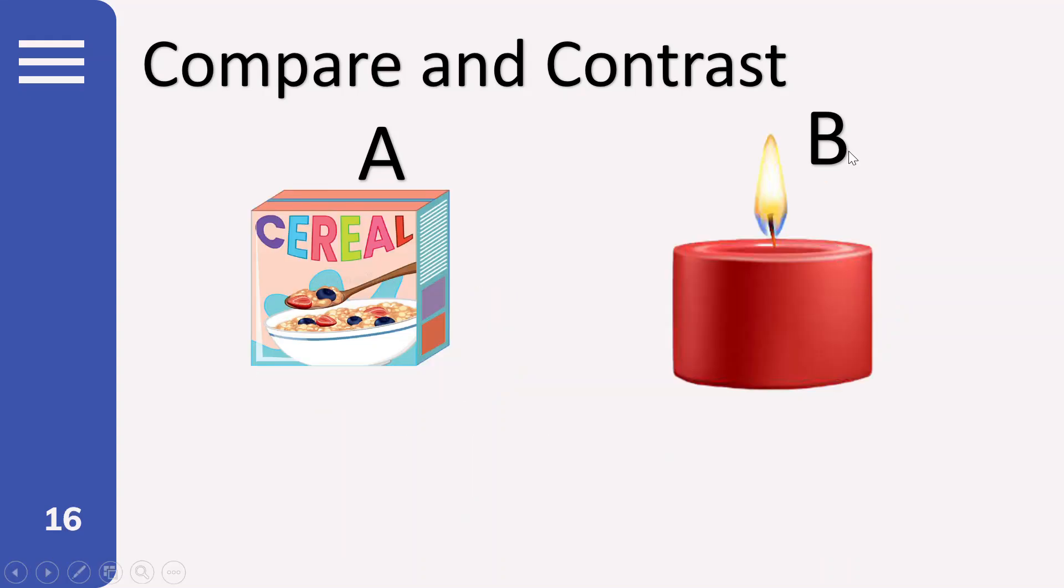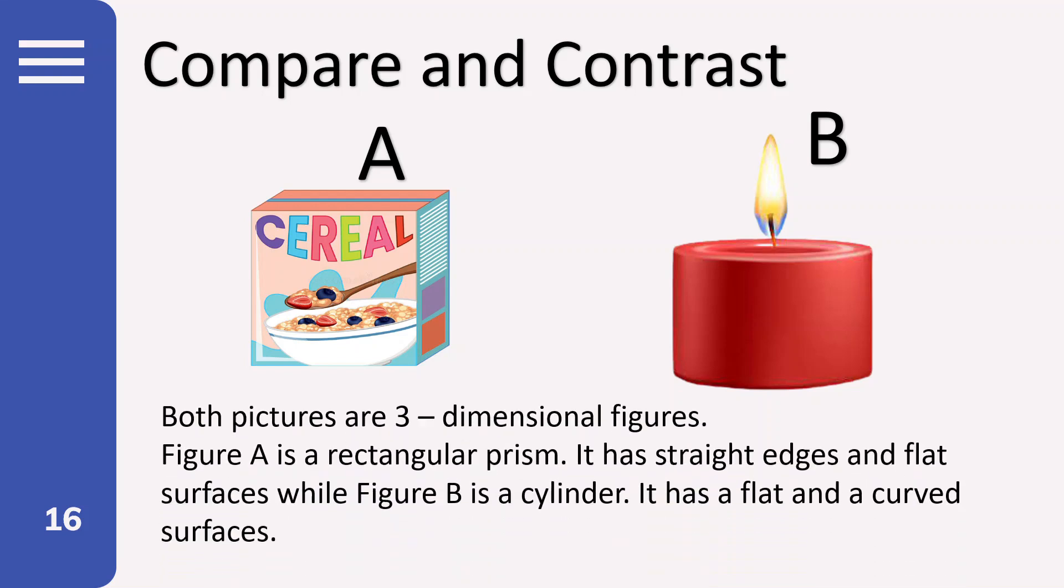Another? Figure A and Figure B. Look at the figures and compare. Alright, so the similarities, both of them are three-dimensional figures. Figure A is a rectangular prism. It has straight edges and flat surfaces, while Figure B is a cylinder. It has flat and curved surfaces.